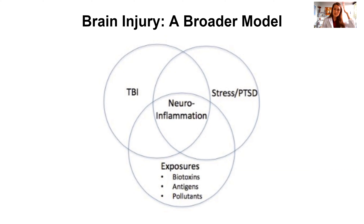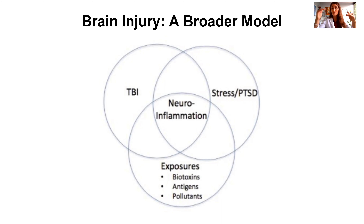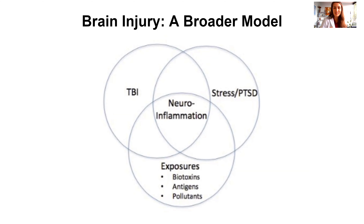Traumatic brain injury — hitting our head and getting concussions — is another major source. Even mild whiplash injuries from car accidents can lead to concussive neuroinflammation. It's very important to keep a log of traumatic brain injuries. We know the first one is bad, but subsequent concussions can lead to even more detrimental effects. If you've had two or three concussions, be very careful and protect your brain — wear a helmet.